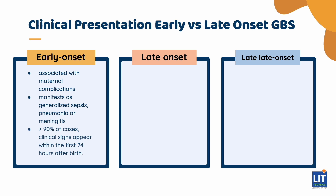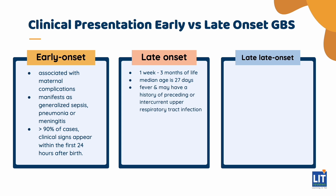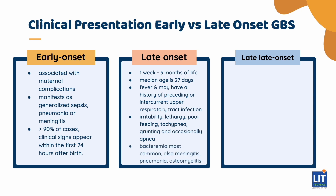Late-onset infection can occur anywhere from one week to three months of life, with a median age of 27 days. Affected infants typically present with fever and may have a history of preceding or intercurrent upper respiratory tract infection. Other clinical findings include irritability, lethargy, poor feeding, tachypnea, grunting, and occasional apnea. Bacteremia is the most common presentation, but patients can also have meningitis, pneumonia, osteomyelitis, cellulitis, or adenitis. Osteomyelitis is most common in the proximal humerus, and the mean age of diagnosis for arthritis is 20 days, with the knee and hip joints most commonly involved.